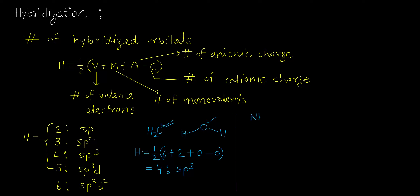Next example: NH₃, ammonia. The central atom is nitrogen. Applying the formula: v = 5 (valence electrons of nitrogen, configuration 2,5), m = 3 (three hydrogen atoms, monovalent), a = 0, c = 0. So H = ½(5 + 3) = ½ × 8 = 4. This means the hybridization in ammonia is SP3.